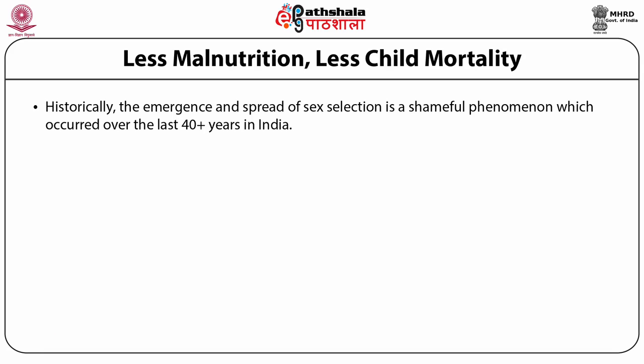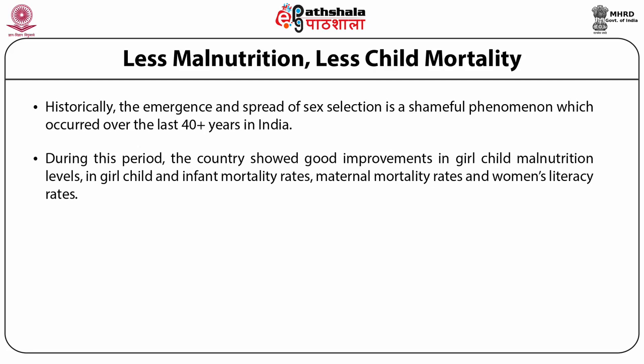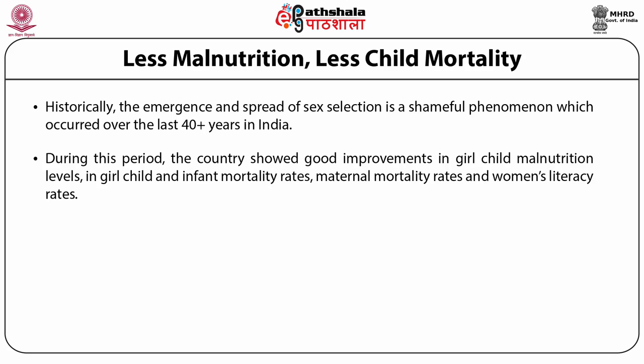While we observe declining child sex ratios, in the last 40 years there have been remarkable improvements in girl-child malnutrition, child mortality, infant mortality, and maternal mortality. Women's literacy has improved very significantly around the country. From the late 80s women have started living longer than men — in Kerala, women are living 5 years longer. What is disturbing is that sex selection, reflecting an extreme form of discrimination against women, is becoming worse while almost all other indicators of women's status are improving.